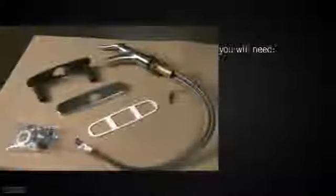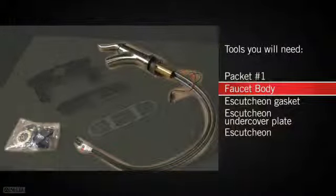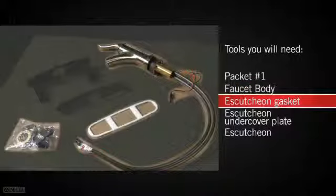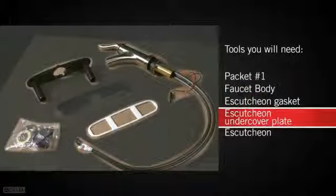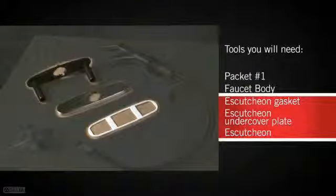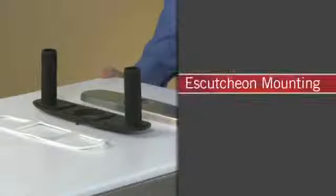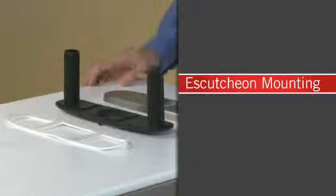For this step, you'll need the packet marked with the number 1, the faucet body, gasket, escutcheon under-cover plate, and the escutcheon from the box. You will only need the escutcheon gasket, under-cover plate, and escutcheon if you are using the escutcheon to cover additional holes in your sink. For three-hole installations, you will need the escutcheon under-cover plate and the escutcheon gasket.